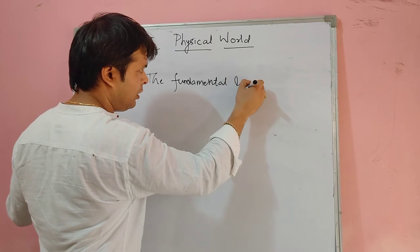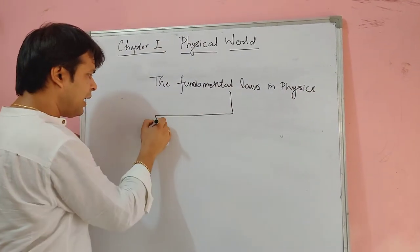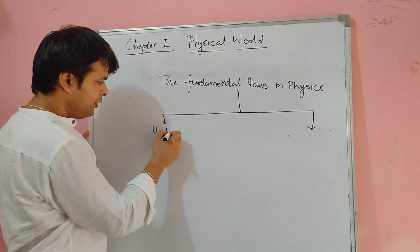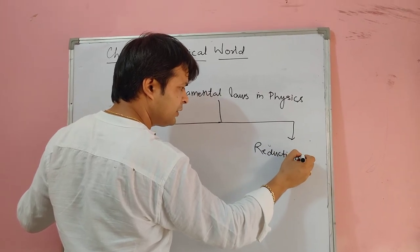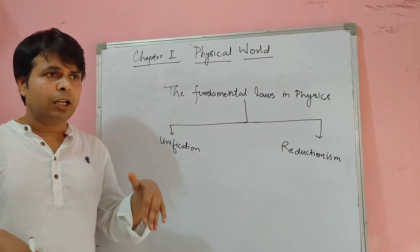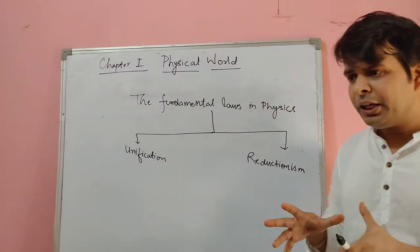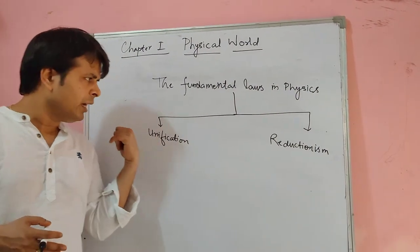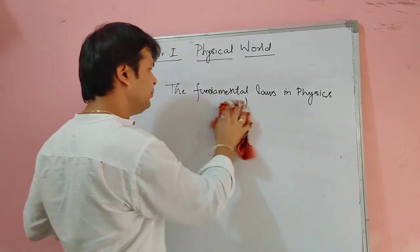There are two fundamental laws which we use in physics, and they are unification and reductionism. In unification, we try to explain various physical events and physical phenomena in terms of a few laws and concepts. We try to explain a lot of physical phenomena in physics. That concept is called unification. We will learn about unification, and then we will learn about reductionism.